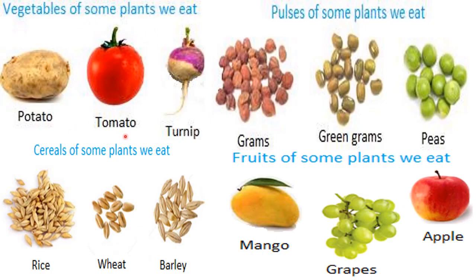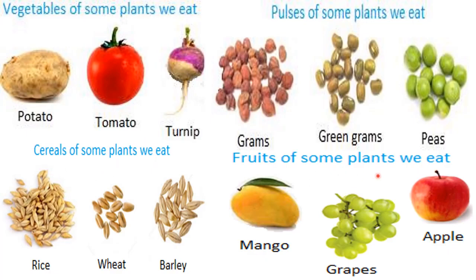Vegetables of some plants we eat: potato, tomato, turnip. Coming to the next, pulses of some plants we eat: grams, green grams, and peas. Cereals of some plants we also eat: rice, wheat, barley. Fruits of some plants we also eat: mango, grapes, apple. So these are the food uses of plants — vegetables, pulses, cereals, and fruits.